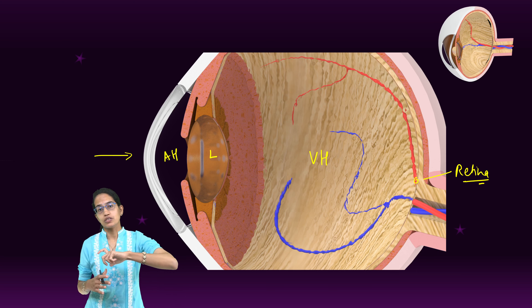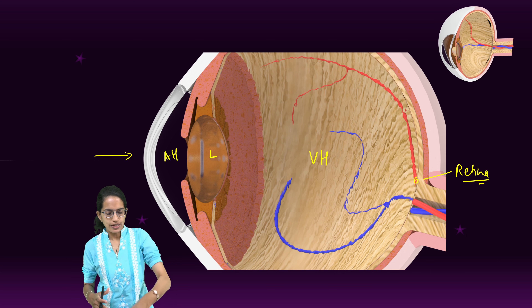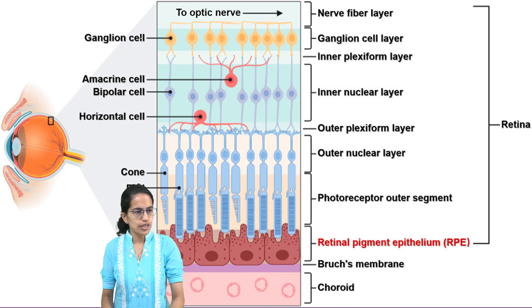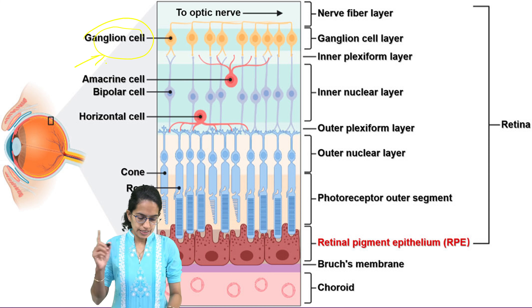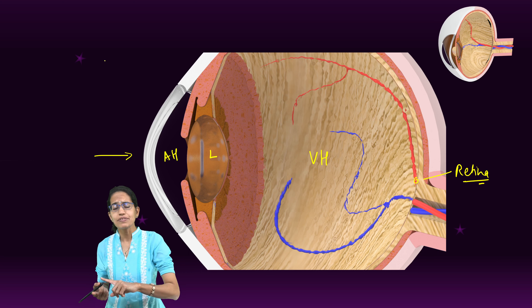Welcome. In this section we would understand the structure of the eye, the mechanism of vision, and the various layers of the retina. Now to begin with, let's first understand the mechanism of vision.